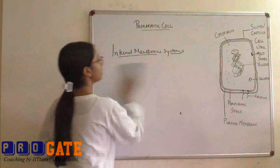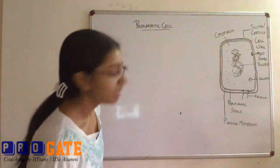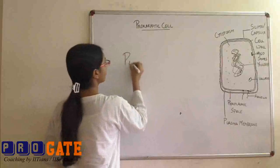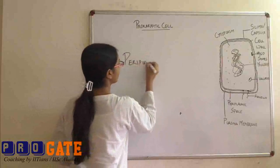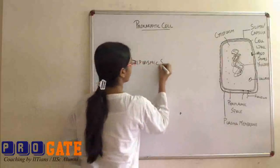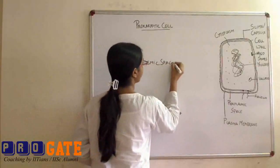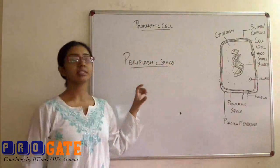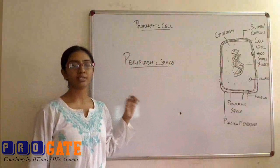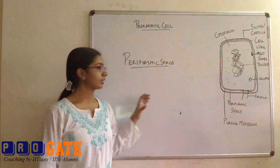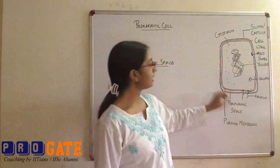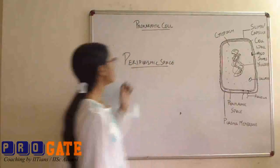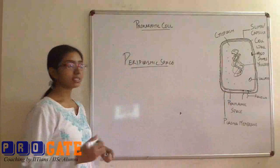This is the periplasmic space that we have. The width of the periplasmic space differs greatly between the gram-positive and the gram-negative bacteria. So as we can clearly see, the periplasmic space is the space between the plasma membrane and the cell wall. So what are the basic functions of periplasmic space?